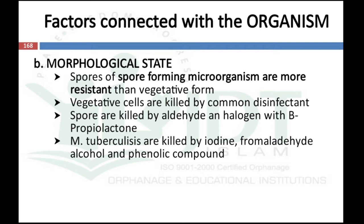The second factor is morphological state. Bacteria may be either in vegetative form or spore-forming form. The spores of spore-forming microorganisms are always more resistant than the vegetative form. Vegetative cells can be killed by common disinfectants, but spores are killed by special disinfectants like aldehydes and ethylene oxide with beta-propiolactone. Mycobacterium tuberculosis is killed by iodine, formaldehyde, alcohol, and phenolic compounds.